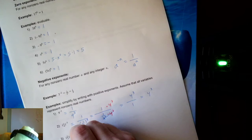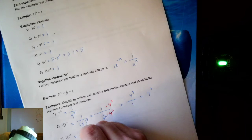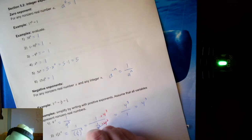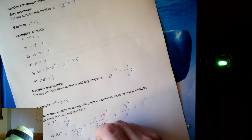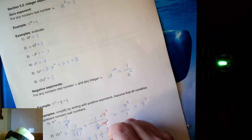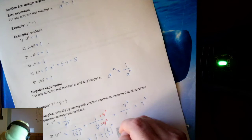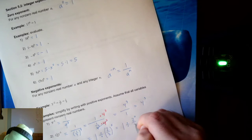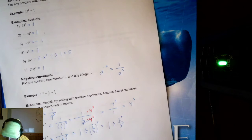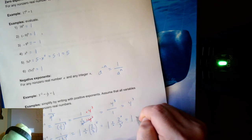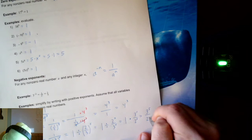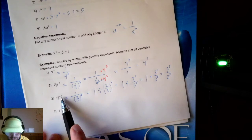Two-thirds to the negative five would be one over two-thirds to the fifth, which I'd rather write as one divided by two over three to the fifth. Before division comes exponents, so this would be one divided by two to the fifth over three to the fifth — the five distributes to the two and the three. I'm going to KFC — keep, flip, change — giving me three to the fifth over two to the fifth. So this started as two-thirds to the negative five and ended as three over two to the fifth.